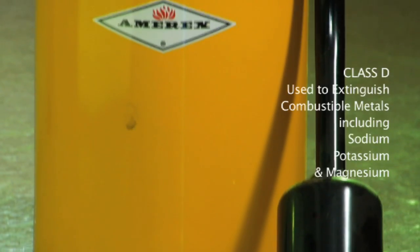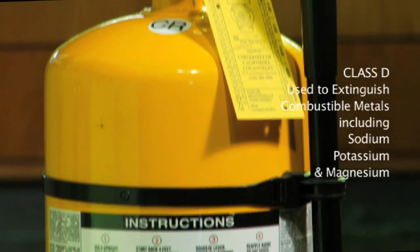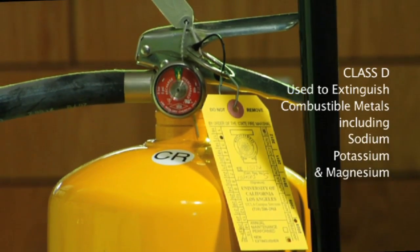Class D fire extinguishers are used to extinguish fires involving combustible metals. Materials in this category include sodium, potassium, and magnesium.